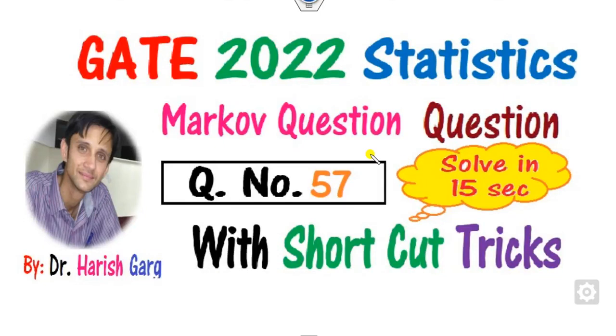Hello everyone, welcome to the next lecture on this GATE 2022 statistics. Today we will discuss question number 57 which is related to the Markov chain process. We will solve this question with the help of a 15-second trick so that you may understand it in a quick manner.